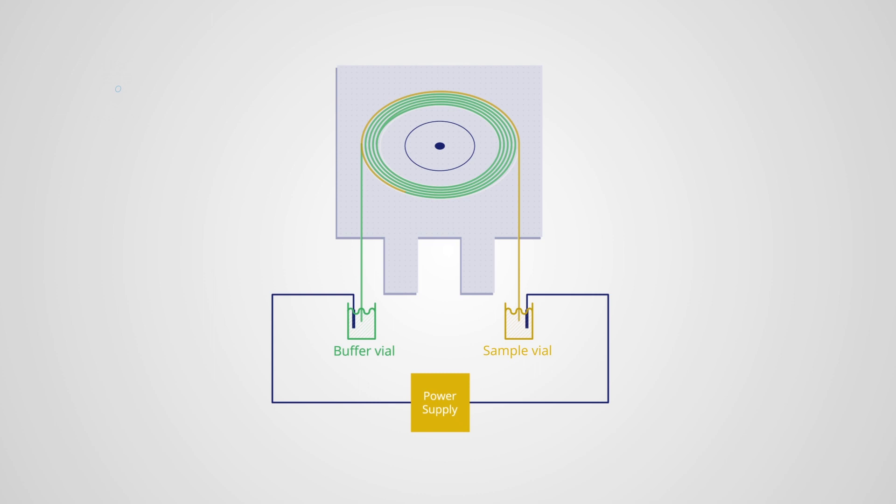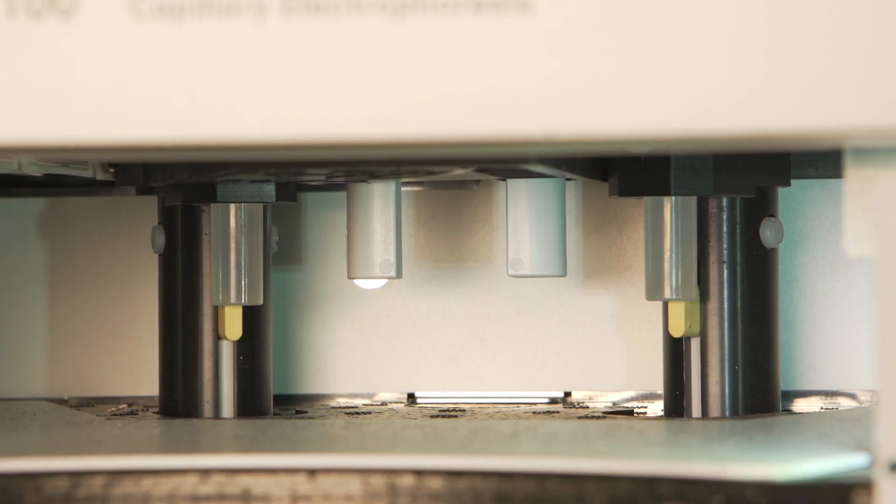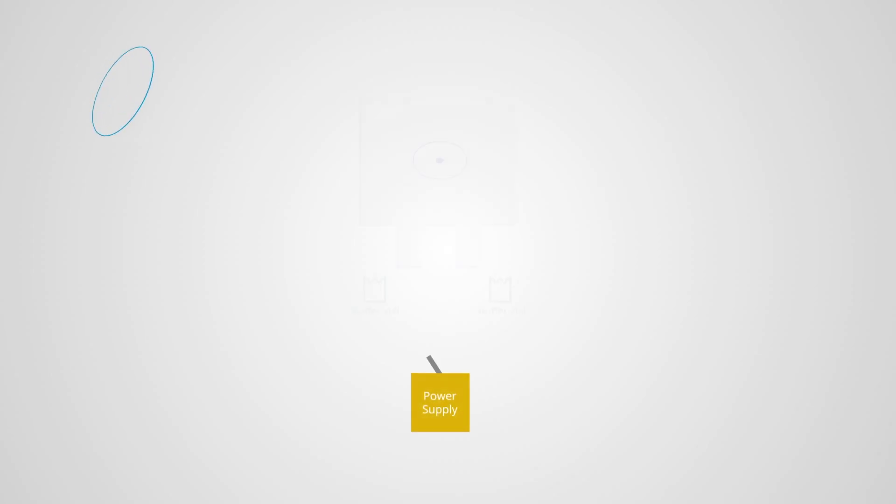This method of injection creates a plug of sample that has the same composition as in the sample vial. The capillary is placed back into the buffer solution and high voltage is applied.